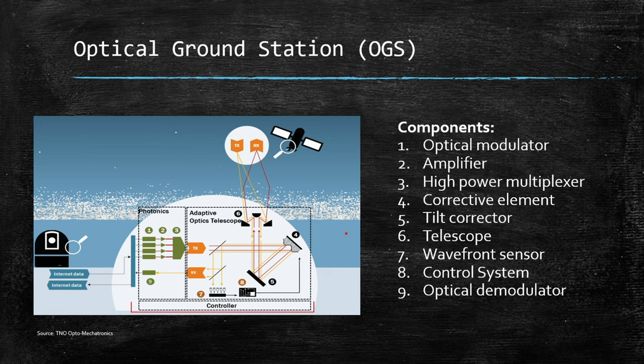Further OGS components include: a Corrective Element, used to correct any distortions in the optical signal ensuring clear transmission; the Tilt Corrector, part of the adaptive optics that corrects for tilt in the incoming wavefront usually caused by atmospheric turbulence; the Telescope, which transmits the modulated signals to space and receives the return signal, serving as the optical antenna of the ground station; Wavefront Sensors, that measure distortion in the incoming signal to allow real-time corrections; the Control System, that manages the operations of adaptive optics ensuring accurate tracking and signal correction; and the Optical Demodulator, that demodulates the received optical signal back into electrical data. An OGS is a marvel of engineering that enables high-speed, high-bandwidth communication with satellites.